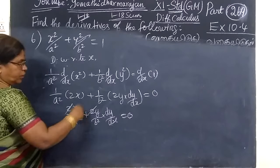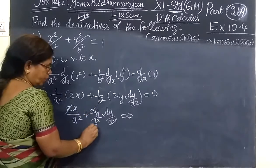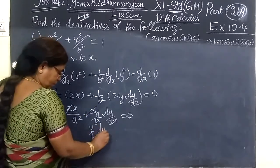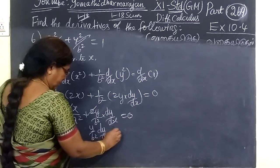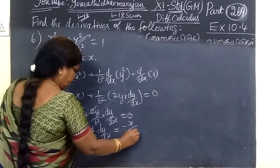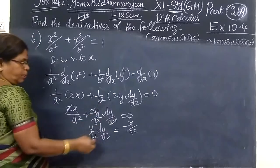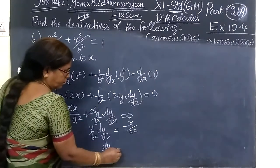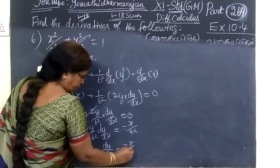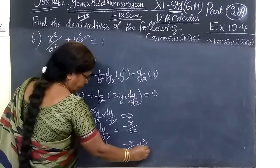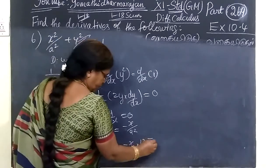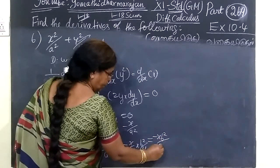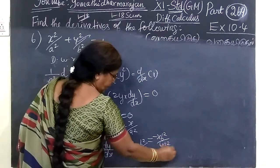So in this way: 2x square plus 2y by b square into dy by dx equal to 0. So dy by dx equal to 0 — this is the reciprocal. So dy by dx equal to minus x by a square means b square by y, so minus x b square by y a square.